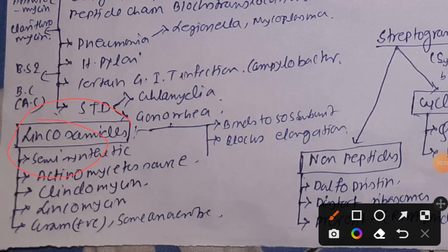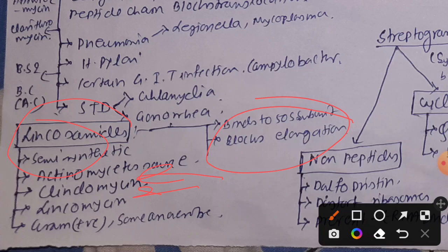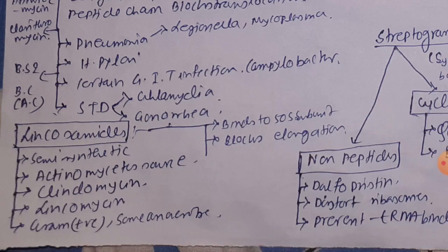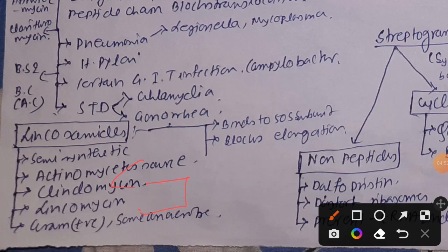Lincosamide is another 50S subunit inhibitor. It is a semi-synthetic drug isolated from Actinomyces. It binds to the 50S subunit and blocks elongation. Examples are lindomycin and lincomycin. Lincosamide is used for treating gram-positive and some anaerobic bacterial infections.